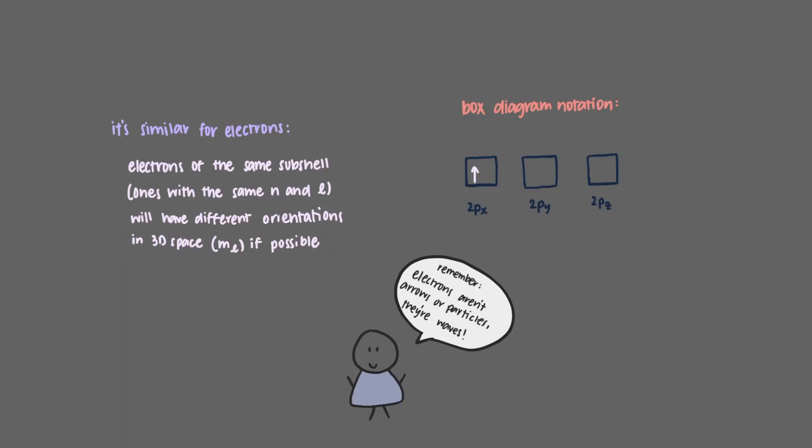So for example, let's say we have an atom with two 2p electrons and the first electron is 2px. We will use box diagram notation, so we have one spin-up 2px electron. Just remember, electrons aren't arrows or particles, they're waves. This box just represents the first three quantum numbers of the electron: n equals 2, l equals 1, and m sub l equals plus or minus 1. Pointing up tells us that the fourth quantum number is m sub s equals plus 1 half.